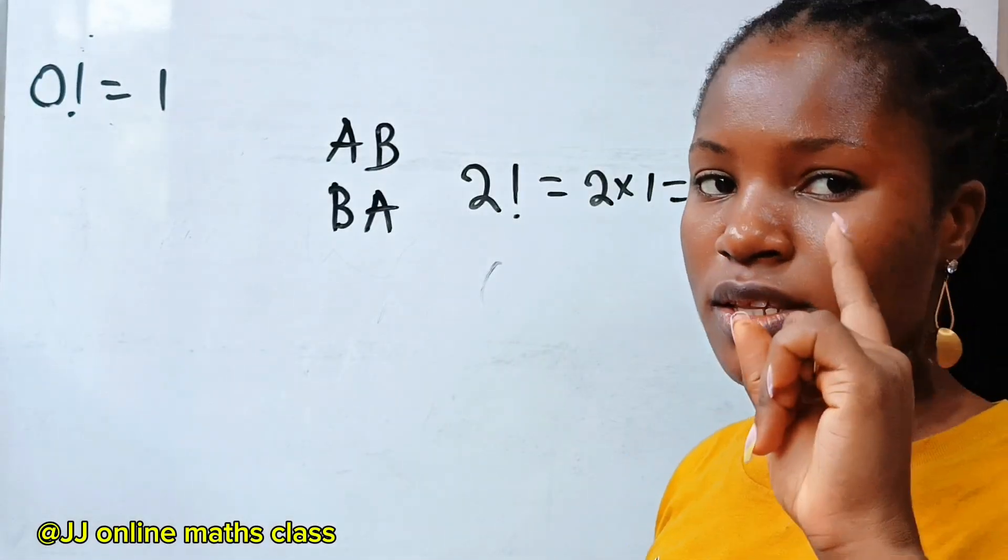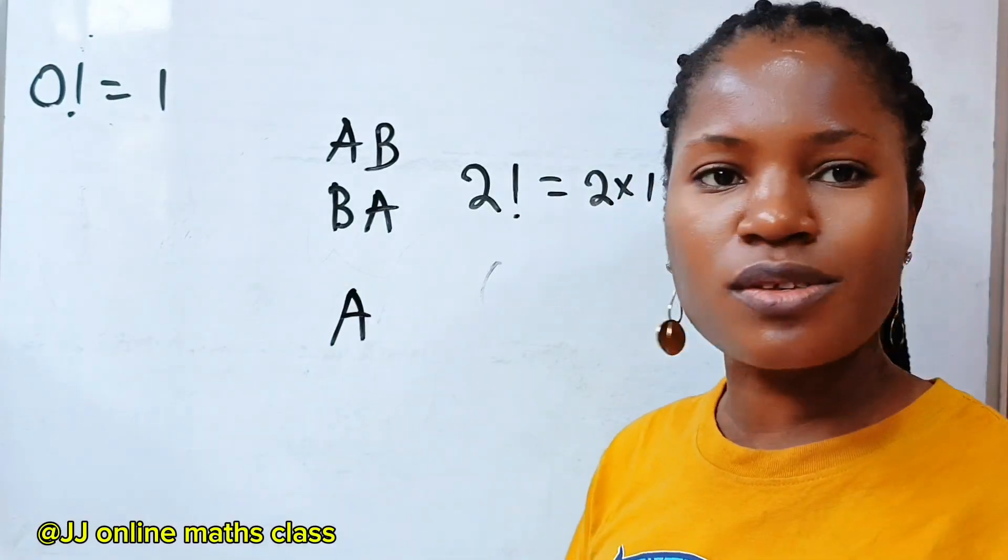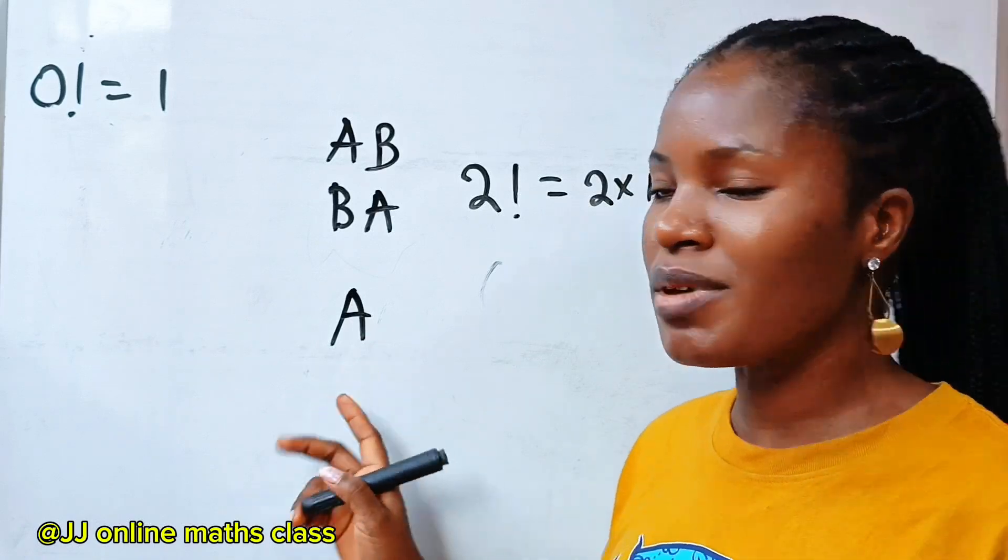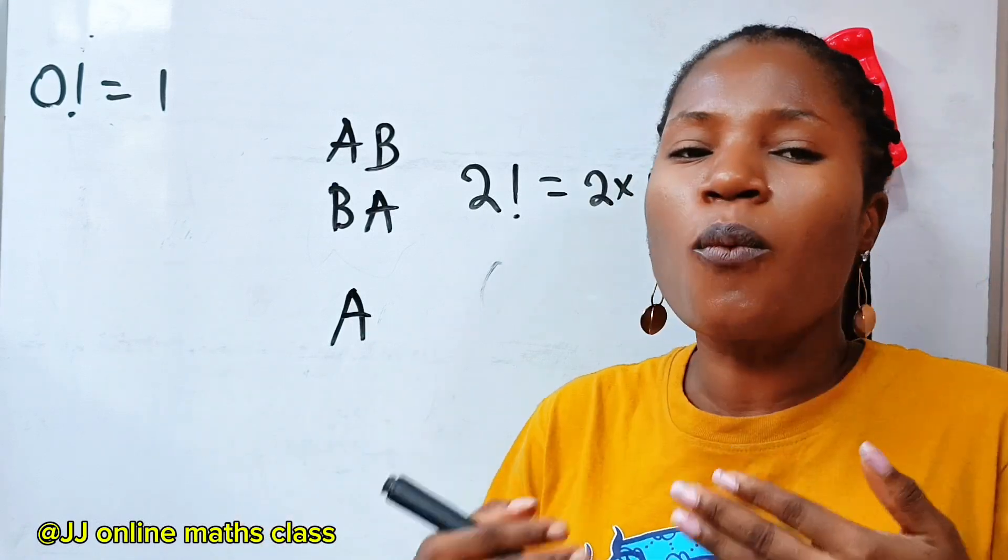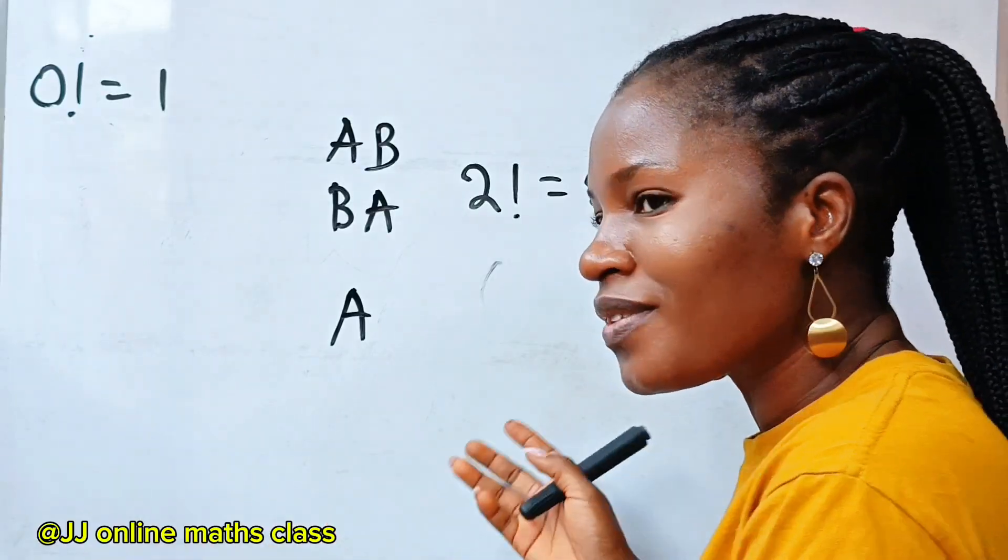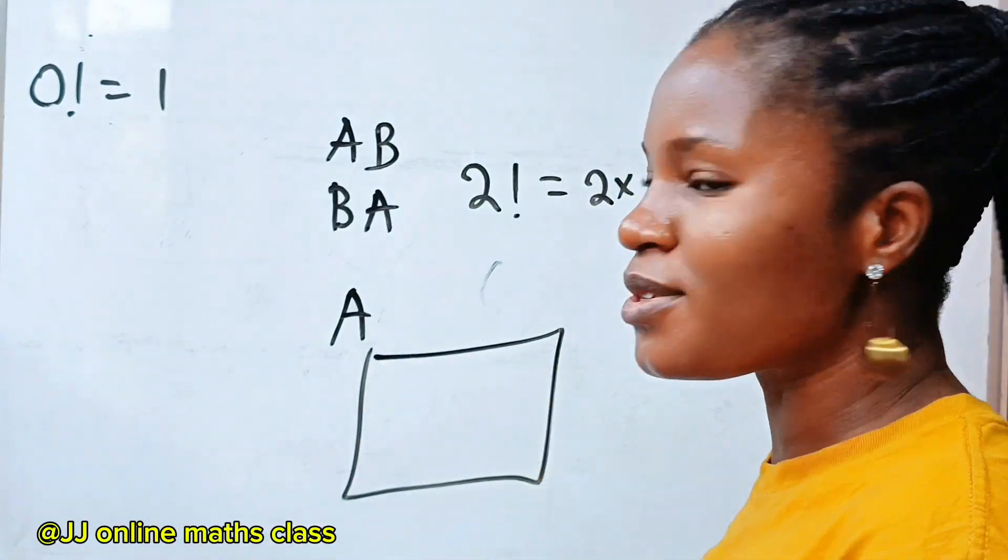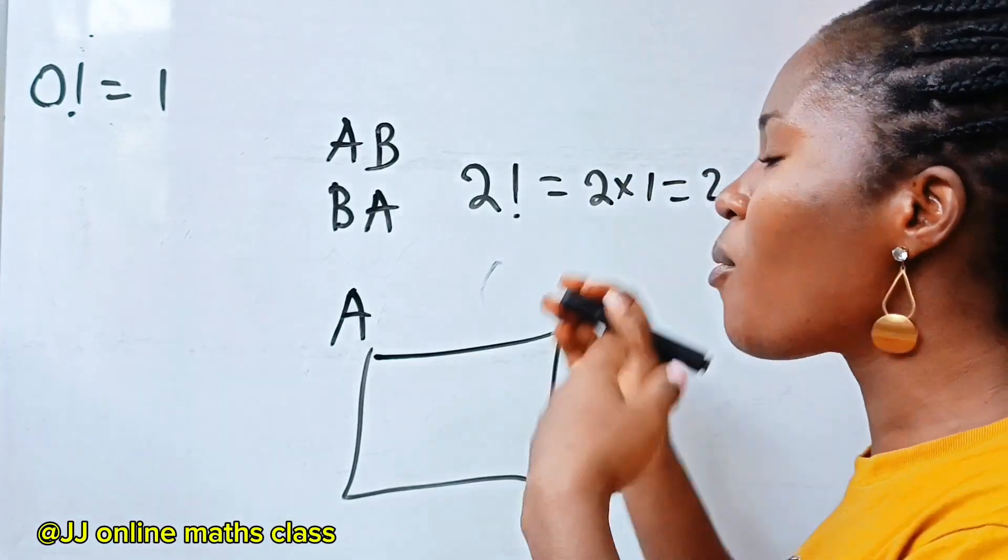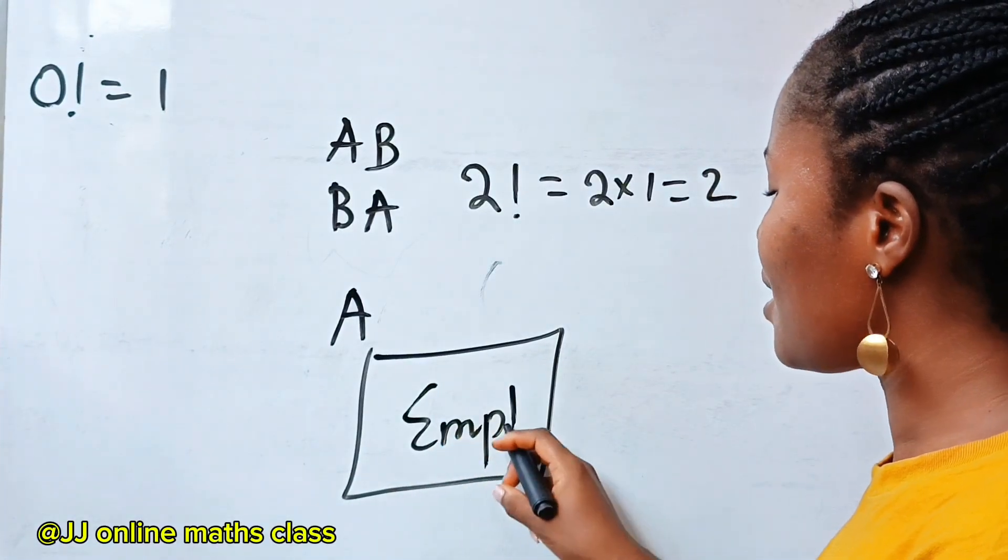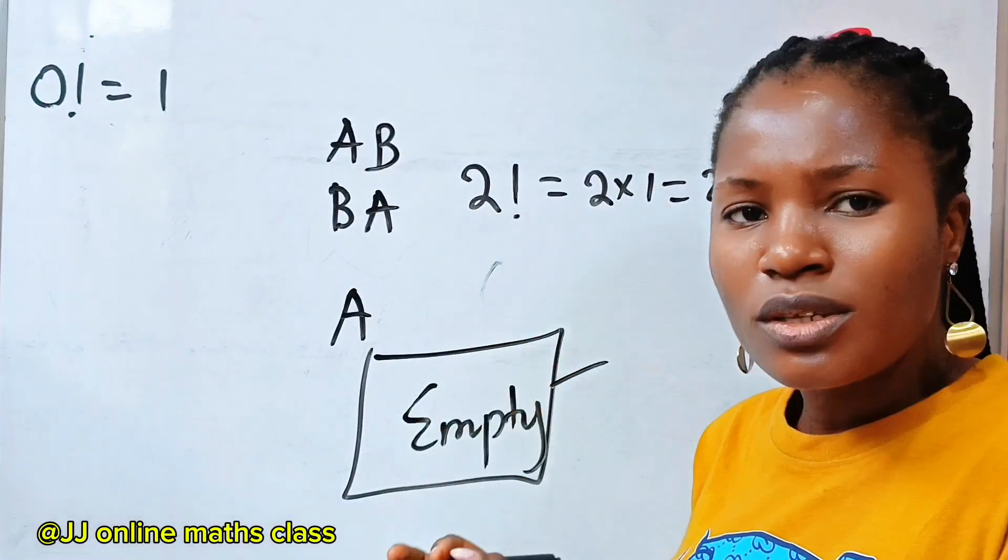Now, if we are given one object to arrange, let's say A, we don't have any other way to arrange one object. It's already arranged. There is nothing we can do. So that means that one factorial is one. Now, when we are given nothing to arrange, we are told, arrange nothing. Nothing is given. So we have nothing to arrange. That means there is only one way to arrange nothing. And that is nothing. We have empty.